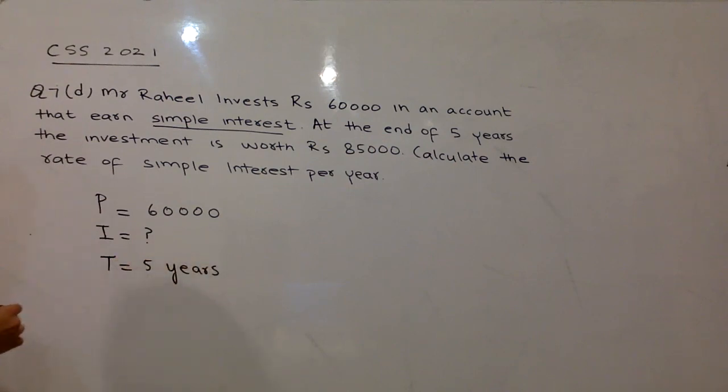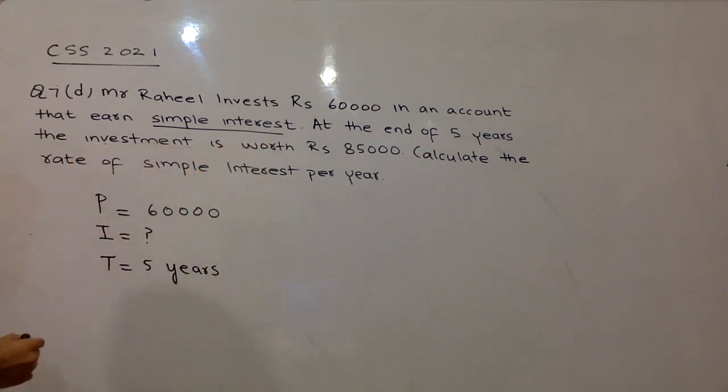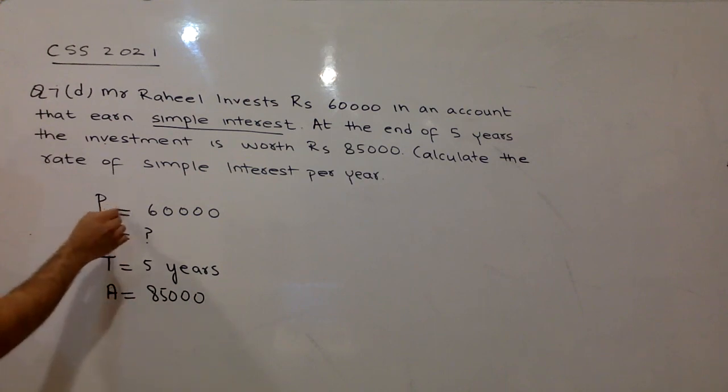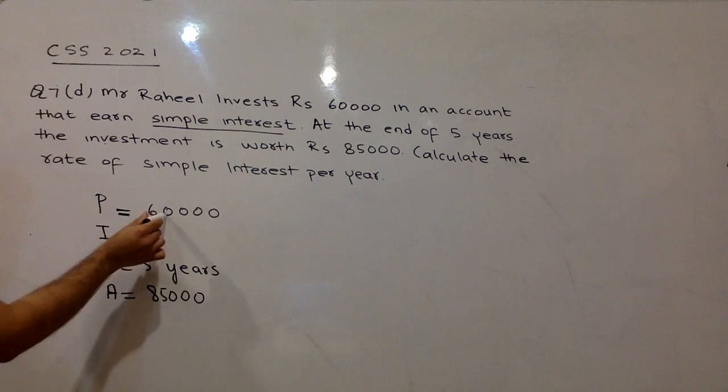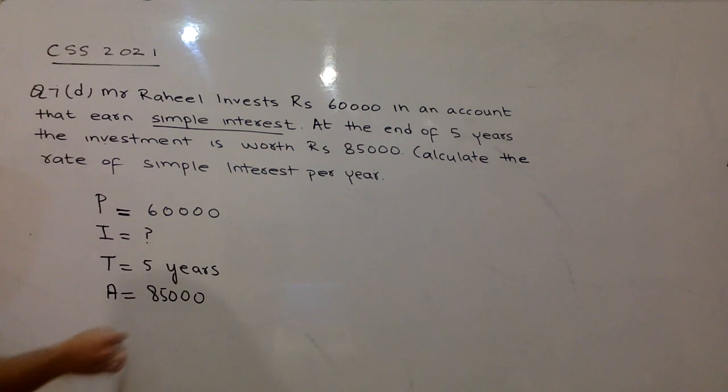And after 5 years, the investment is worth Rs. 85,000. So, which is the amount after 5 years, which is 85,000. Now, which amount you receive, and which investment has been invested, the investment that is Rs. 60,000. And the amount that has been received is Rs. 85,000.